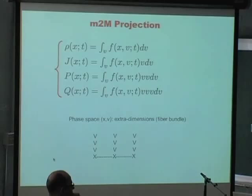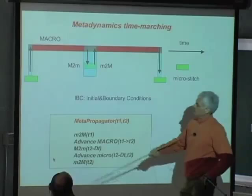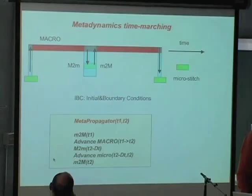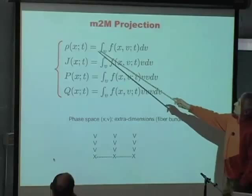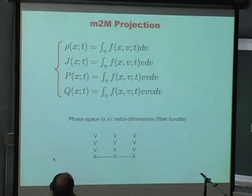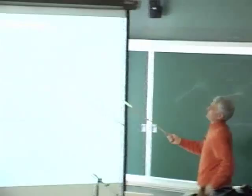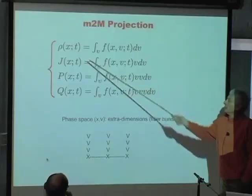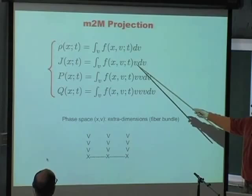Step number one: suppose we are given a certain distribution function. We want to bring it onto the macro track. So we have to generate the kinetic moments, the macroscopic moments. If I have the distribution function to generate the fluid density at a given point, all I have to do is integrate in velocity space. Because if I'm at a fluid position, and I accumulate all the molecules regardless of their velocity, I generate the amount of mass per unit volume at a given point in time. If I weight with the molecular momentum, what I generate is the current — which is density times velocity.